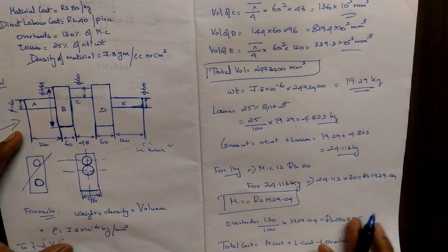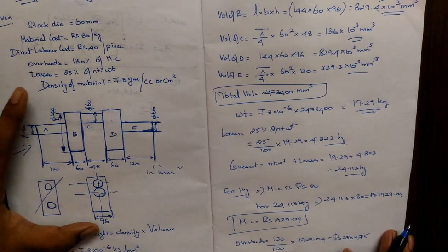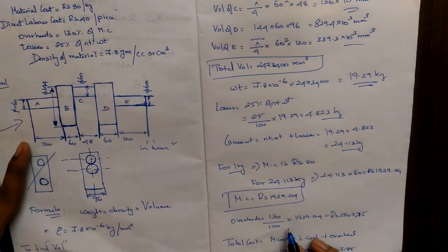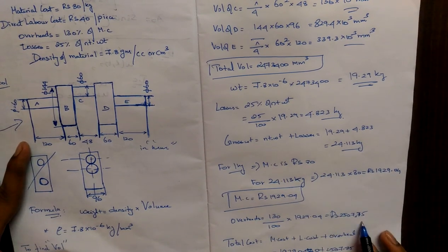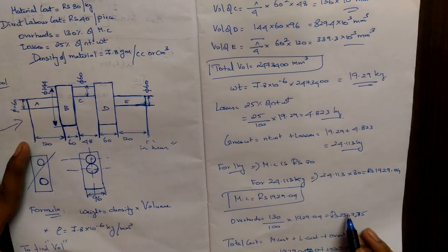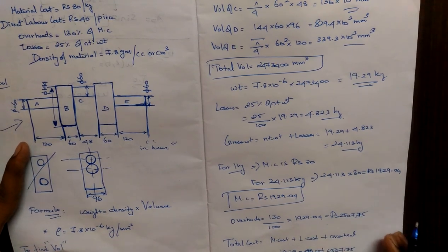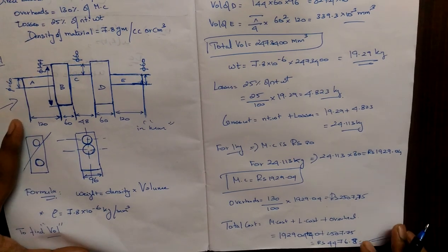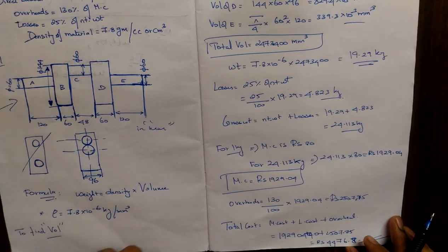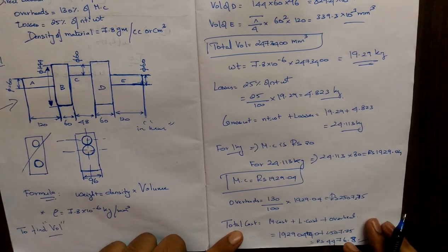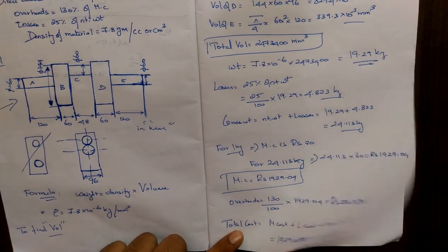We find cost: 1 kg of material costs Rs. 80, so total material cost = gross weight × 80. Overhead cost = 130/100 × material cost. Labor cost is Rs. 40 per piece. Adding material cost, labor cost, and overhead expenses gives the total cost of forging. This is a very basic problem. Comment any topic in PPC and it will be solved. Thank you.